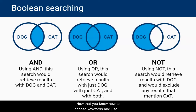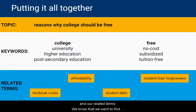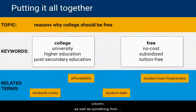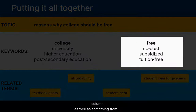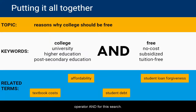Now that you know how to choose keywords and use Boolean operators, let's put it all together. Here we have our topic, our list of keywords, and our related terms. We know that we want articles that mention something from our first column as well as something from our second column, so we will use the Boolean operator AND for this search.